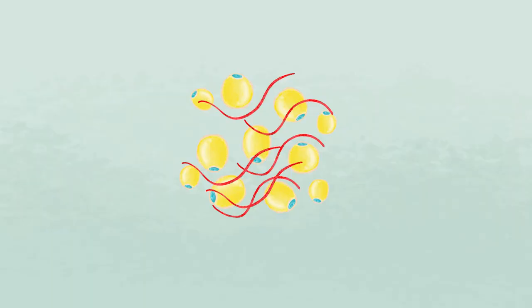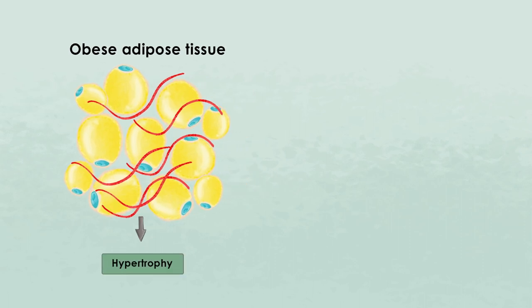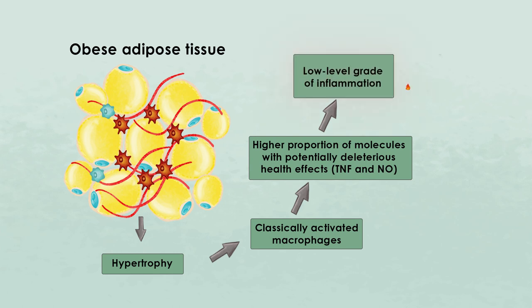In our last video, we already described the white adipose tissue as an endocrine organ, and showed you how the metabolic syndrome induces important changes in the structure and functioning of this tissue. As we said, obese adipocytes become hypertrophic and there is an infiltration of classically activated macrophages, which produce several molecules that trigger low-grade systemic inflammation — a very important hallmark in the metabolic syndrome.